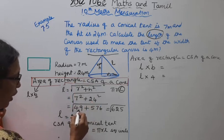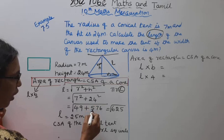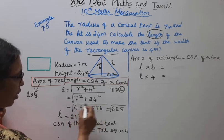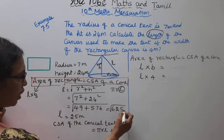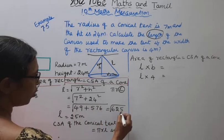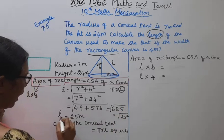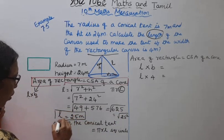That is 7² = 49 plus 24² = 576. 49 + 576 = 625. Square root of 625 is square root of 25². L equals 25 meters.